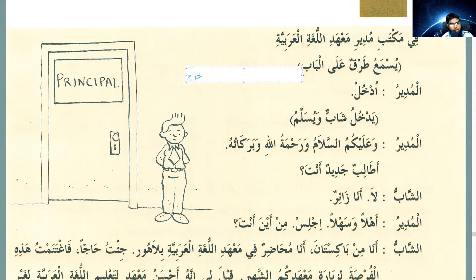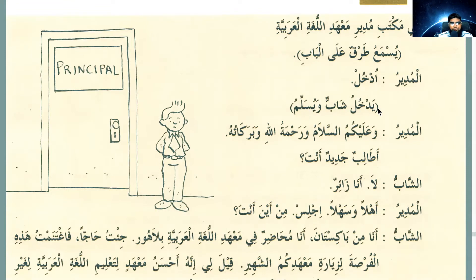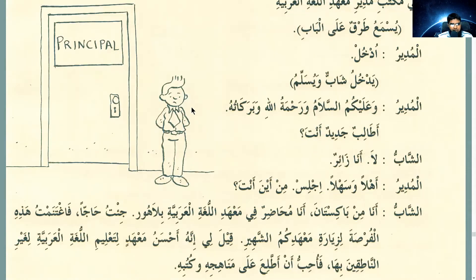Kharraja means to leave — that's form 2 as well. Akharraja is form 4 with hamza, meaning to remove someone. Takharraja is form 5, meaning to graduate. A young man enters and he gives salam, and the mudir says wa'alaikum as-salam wa rahmatullahi wa barakatuh. The mudir asks: are you a new student?